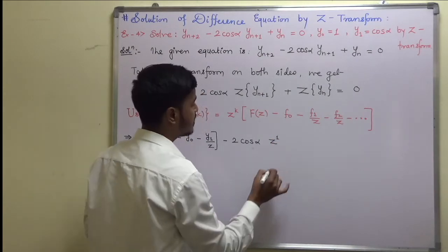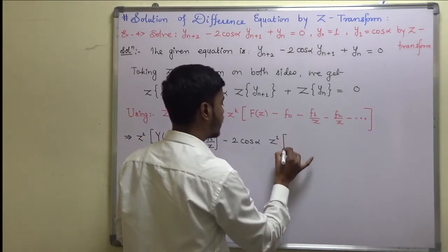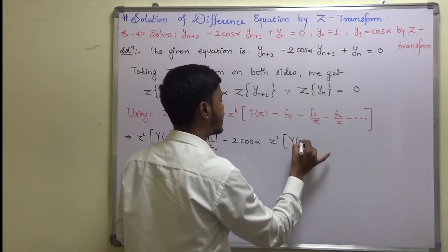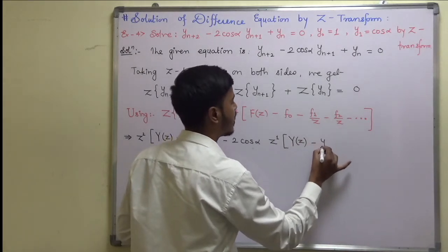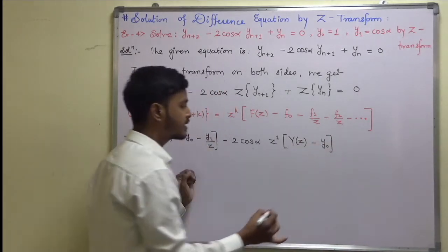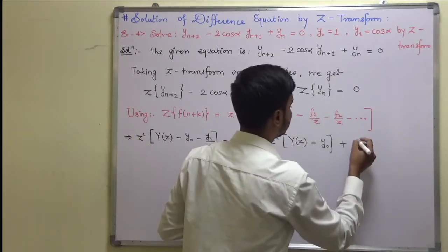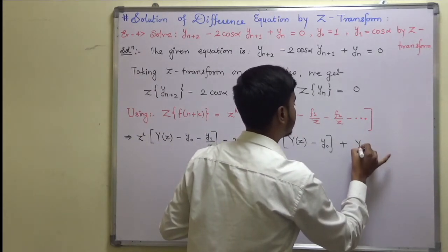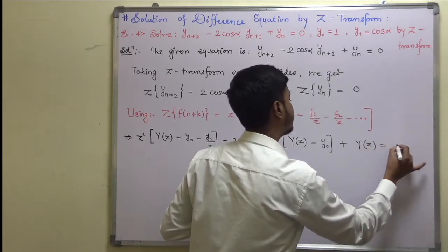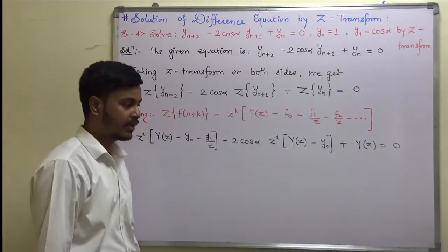Here k is equal to 1, so z^1 times [y(z) - y(0)]. This completes the Z-transform of this, and then write down the Z-transform of this, which is y(z). Now try to solve this.